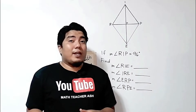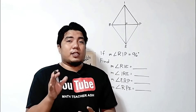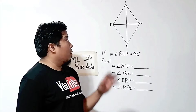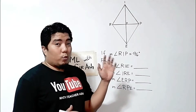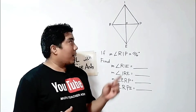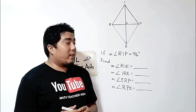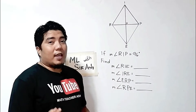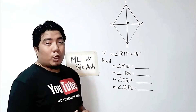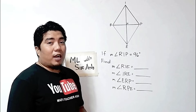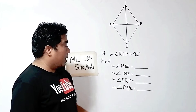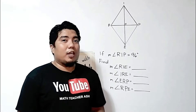We are now at our first discussion on the rhombus. We have figure R-I-P-E, which is a rhombus, in which the diagonals intersect at point N. The given is: if the measurement of angle RIP is 96 degrees, what are the measurements of angle RIE, angle IRE, angle ERP, and angle RPE?